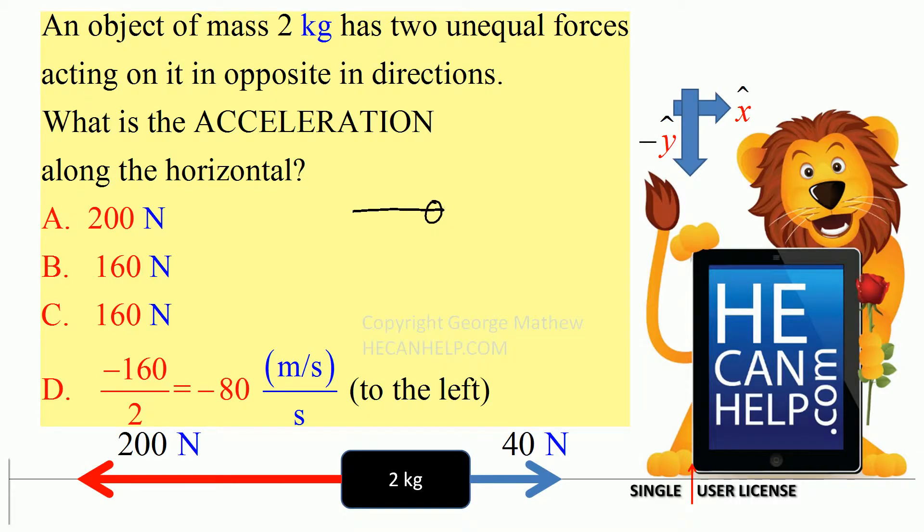So we have 200 newtons to the left and we have 40 newtons to the right. So what is the vector sum? Positive 40 is to the right and what is to the left? 200. What is 40 minus 200? It is negative 160.